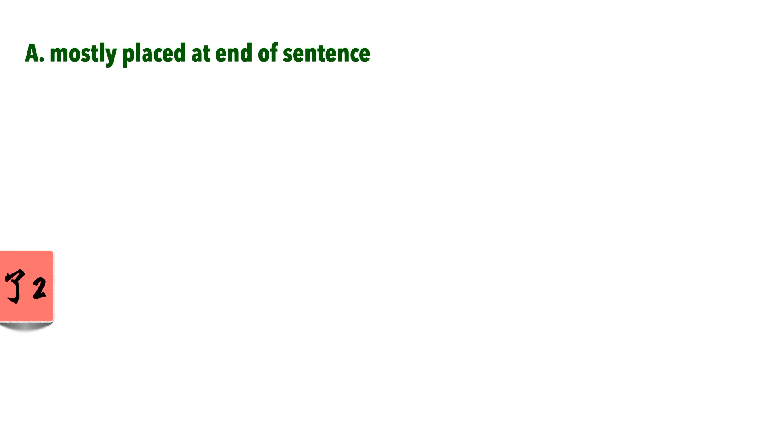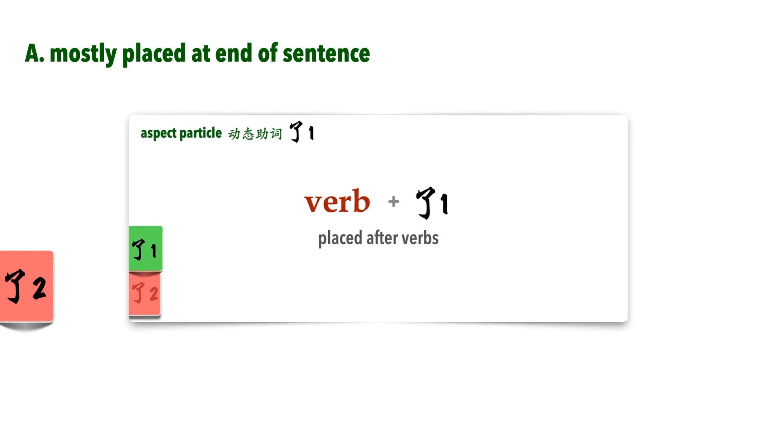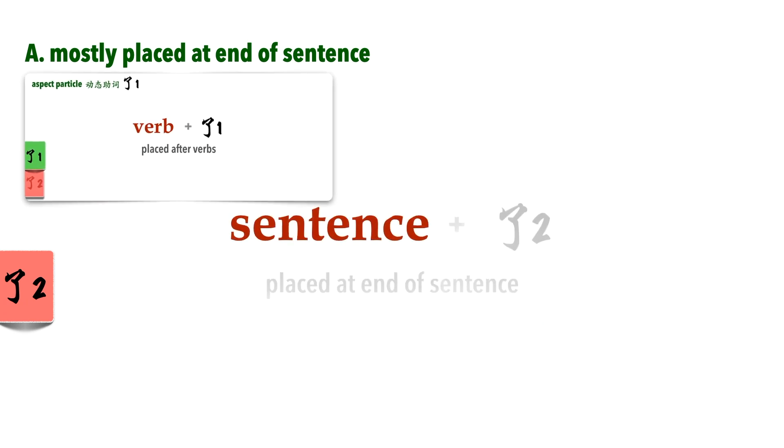Mostly placed at the end of a sentence. This is one easy way to decide whether you're looking at 勒1 or 勒2. As we have already seen, 勒1 is in most cases placed after the verb. 勒2, on the other hand, mostly comes at the end of a sentence.